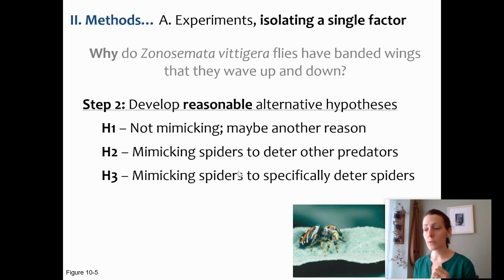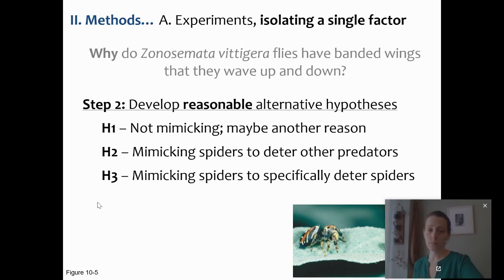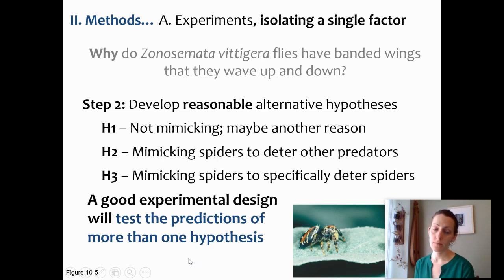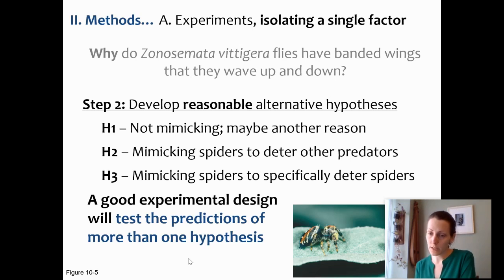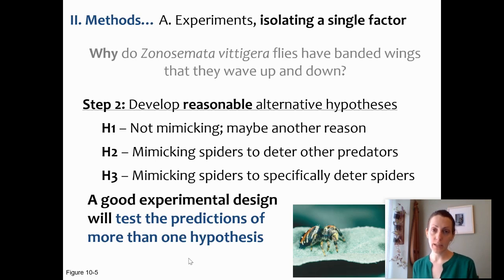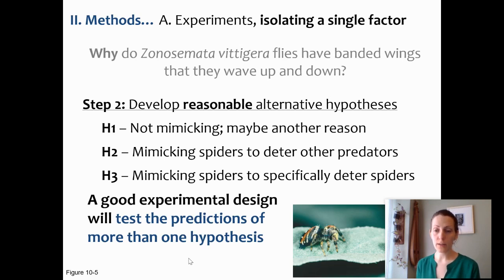We need to design experimental treatments to test each of these hypotheses separately. We could do multiple separate experiments for each hypothesis, but the best, most convincing approach would be to design an experiment that allows us to test all of these hypotheses simultaneously. That way each test isn't confounded by having happened at a separate time, with a separate group of predators or flies, or under different conditions. If we can test all contradicting hypotheses in a single experiment, all the better.